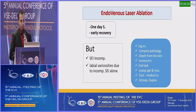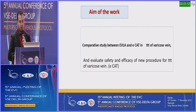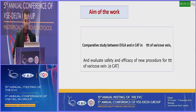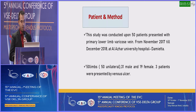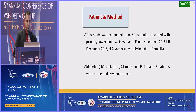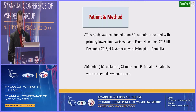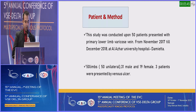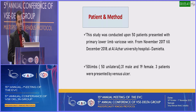Aim of the work: a comparative study between endovenous laser ablation and ECAT in treatment of lower limb varicose vein. The study was conducted among 50 patients presenting with primary lower limb varicose vein from November 2017 till December 2018 at the Azhar University Hospital. 50 patients: 31 male and 19 female, with 3 patients presenting with venous ulcer.